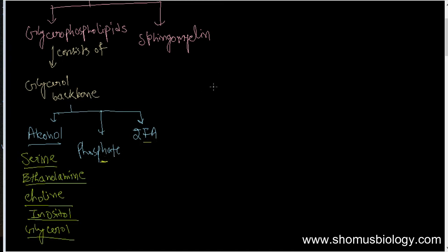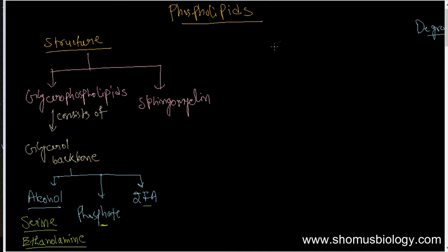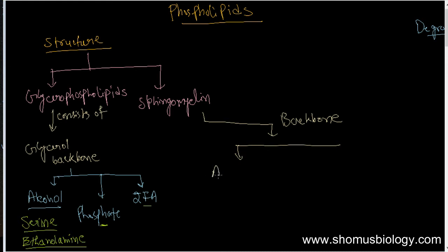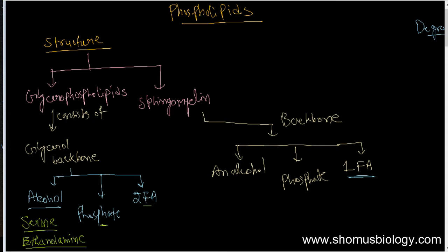Because they have the phosphate group separated, with two fatty acids connected to it. On the other hand, sphingomyelin can be broken down as follows: sphingomyelin consists of a backbone that can be divided into three sections — an alcohol, a phosphate group, and only one fatty acid, not two. That is the uniqueness. The alcohol content in sphingomyelin can only be choline.